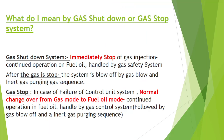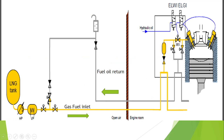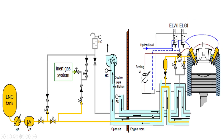In gas shutdown there is an immediate stopping, and in gas stop there is a normal changeover. Before explaining gas stop and gas shutdown further, let us understand the normal pipeline. From the LNG tank, a high-pressure compressor is provided from where the gas fuel comes and goes to the accumulator. The remaining gas which has not been injected returns back to the system. Most of the fuel gas pipelines are situated outside the engine room, and those inside the engine room are provided with a duct.